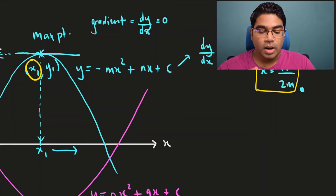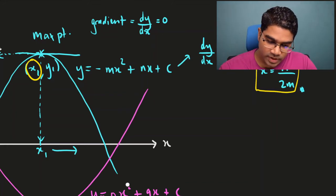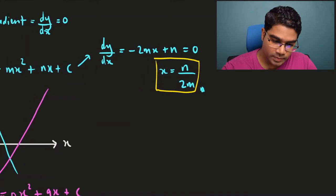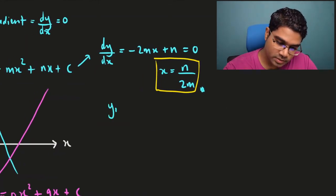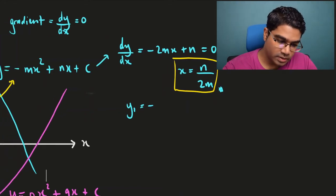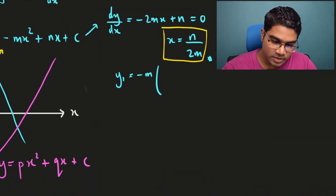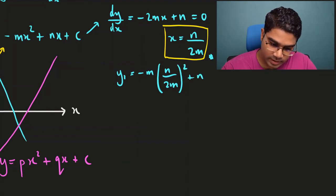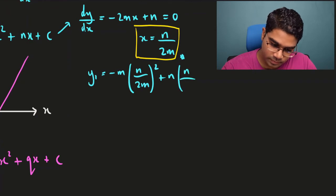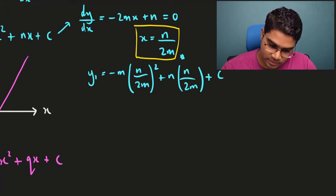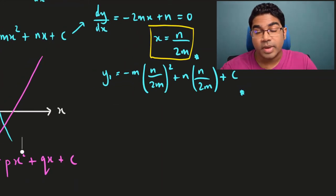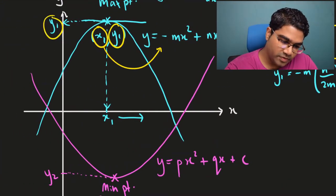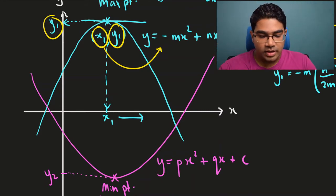So how do we find y1 — the y coordinate at the maximum point? We take this value of x, x1, and substitute it inside the equation of the curve. So y1 equals negative m times (n over 2m) squared, plus n times (n over 2m), plus c. This is how we get the y coordinate of the maximum point, and notice this y coordinate is also the maximum value of y.